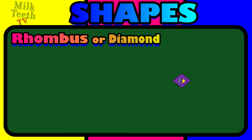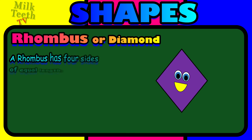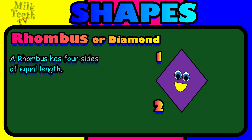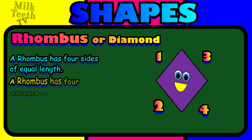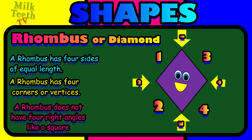Rhombus, or a diamond. A rhombus has four sides of equal length, just like a square: one, two, three and four. A rhombus has four corners or vertices: one, two, three and four. But a rhombus does not have four right angles like a square.